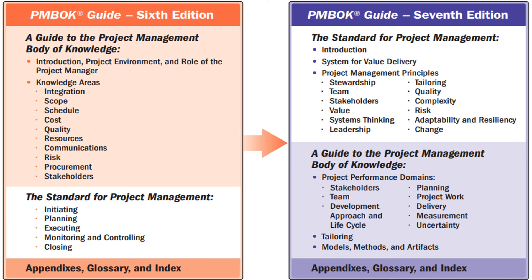The second section talks about tailoring, and models, methods, and artifacts — what different models, methods, or artifacts can be used for project management principles and performance domains, and how we can tailor those. This is also covered as part of the guide to project management body of knowledge in the 7th edition, followed by the normal appendix, glossary, and index. So the major difference from 6th to 7th edition is the structure itself changing, with greater inclusivity of agile, lean, and value delivery concepts.